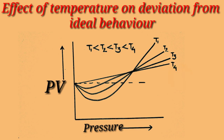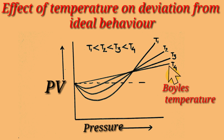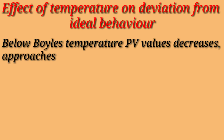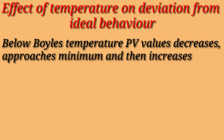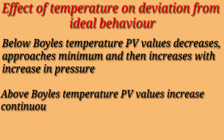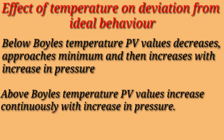Thus Boyle's law is obeyed within the range of pressure at that temperature, which is T4, called Boyle's temperature. Below Boyle's temperature, the value of PV first decreases, approaches a minimum, and then increases with increase in pressure. Above Boyle's temperature, the value of PV increases continuously with increase in pressure.